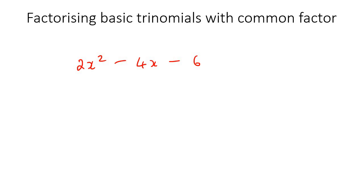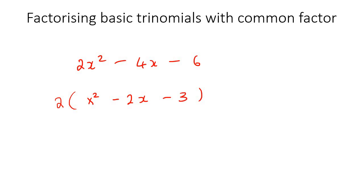For example, I'm not going to do this as a whole example, but you could see that each of these terms you could factor out a 2. So you would take out a 2 in the front, and then you would be left with x squared, 2x, and 3. Then what you would do in the next step is go ahead and factorize this as a trinomial. That's what we talk about when we say a common factor.